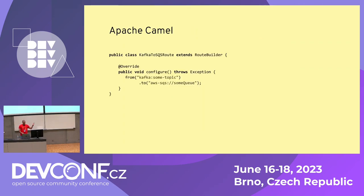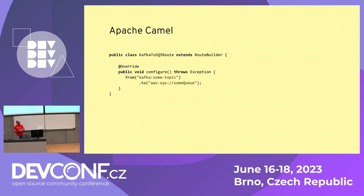If you have never seen what a Camel route looks like, I'm showing an example here. This one is written in Java — it basically shows how you could pick some data from Kafka and send it to a queue on Amazon SQS. This route could also be written in XML or YAML, among other languages.